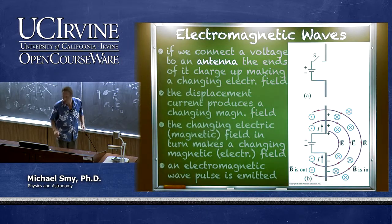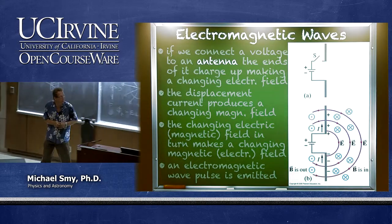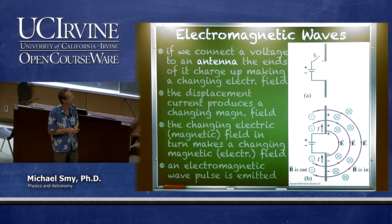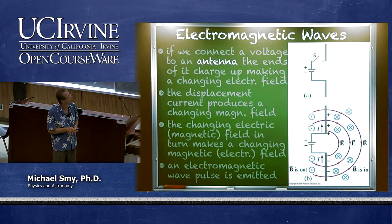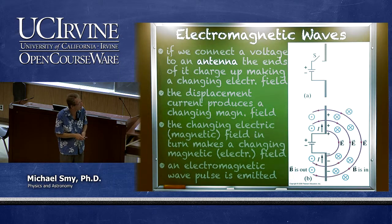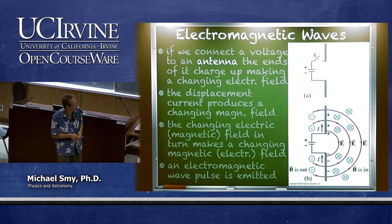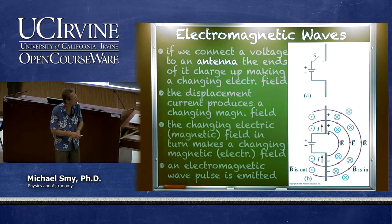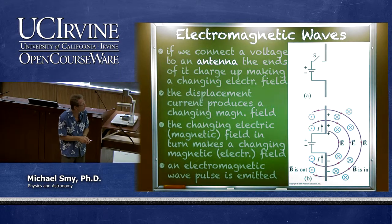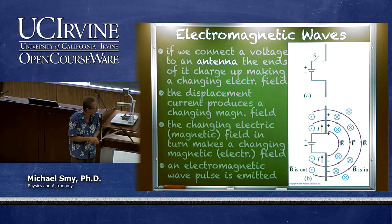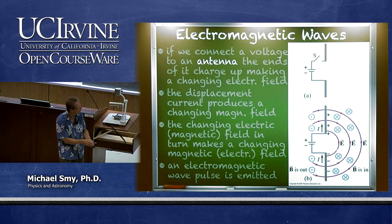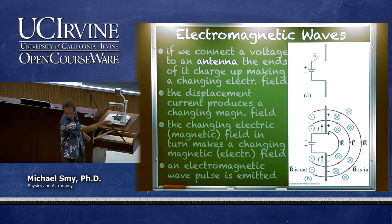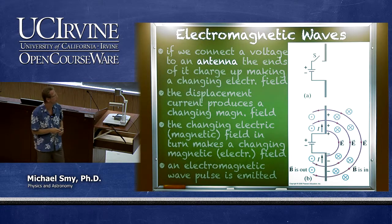Now let's look at a case similar to the capacitor, but we connect a battery to an antenna — basically a straight metal rod. Positive charges flow to one end, negative charges to the other, creating an electric field that goes from positive to negative charges on all sides of the wire. Because of the displacement current, we also have a magnetic field surrounding the wire. The magnetic field comes out of the plane on one side and loops around to go back on the other side.